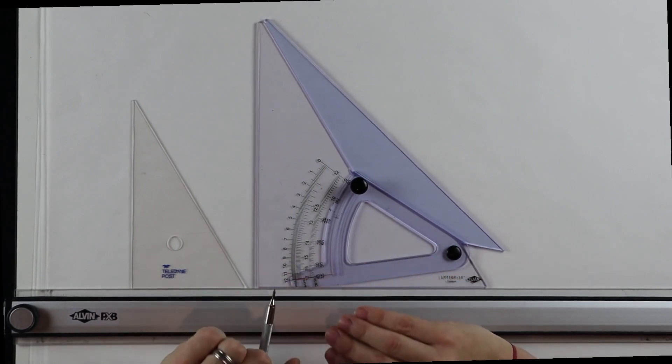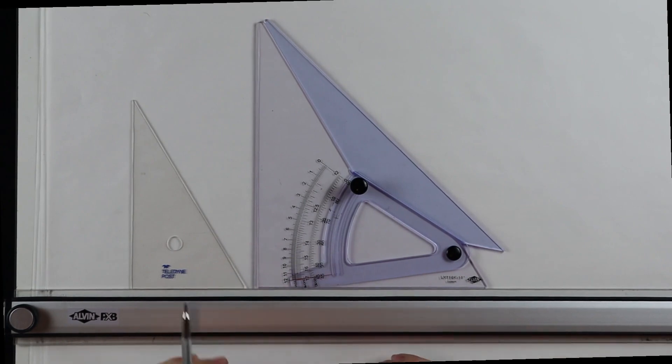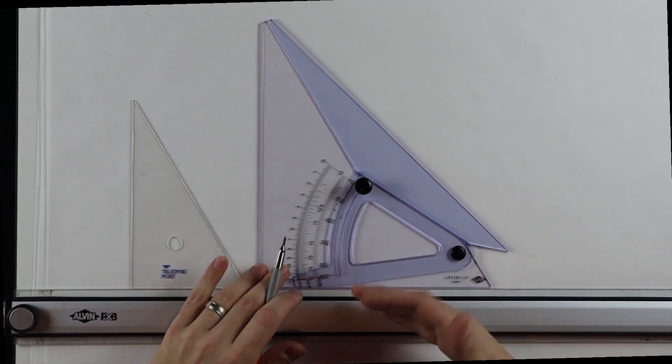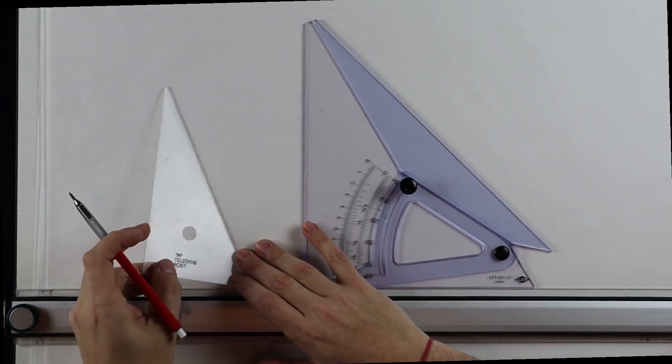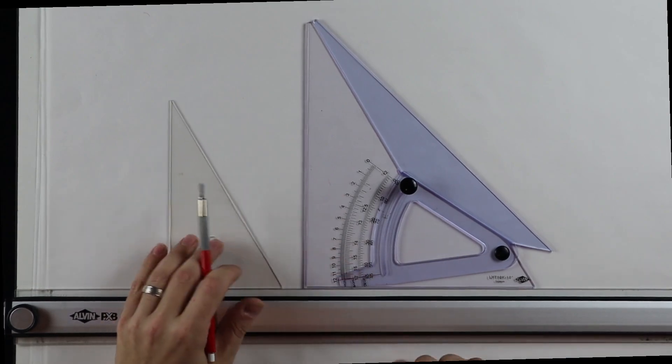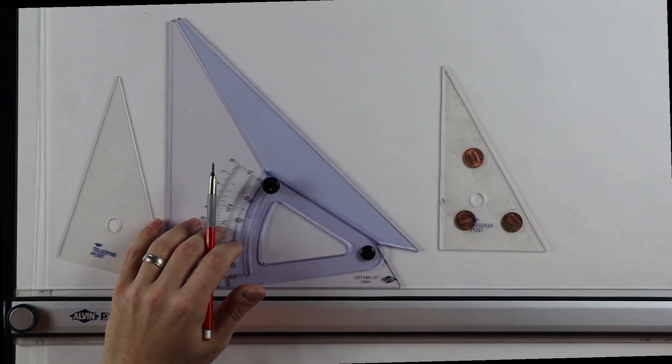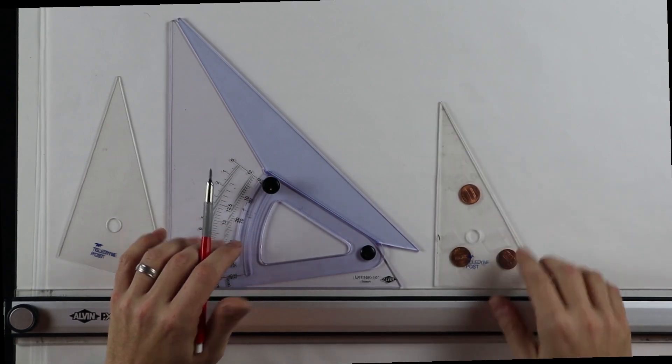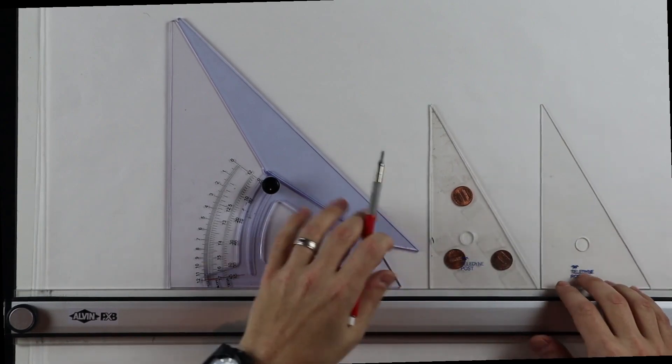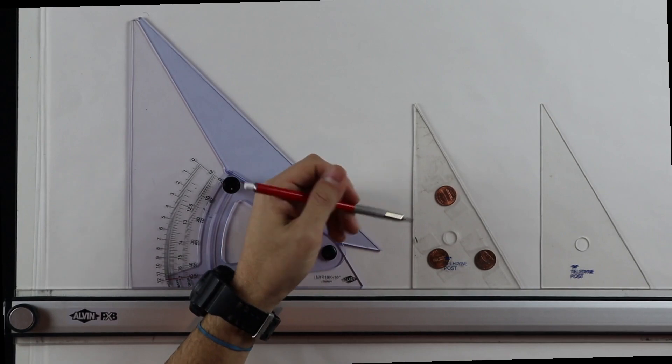So the adjustable triangle not just functions as a normal drafting triangle, you can actually ink with it as well. Also what you can do, if you don't happen to have an adjustable triangle with a beveled edge or you just want to convert your normal triangle with a flushed edge into something that can be inked, a little hack that I show students that I learned when I was in school is to simply just take a regular triangle, and all I did was I taped three pennies underneath it.